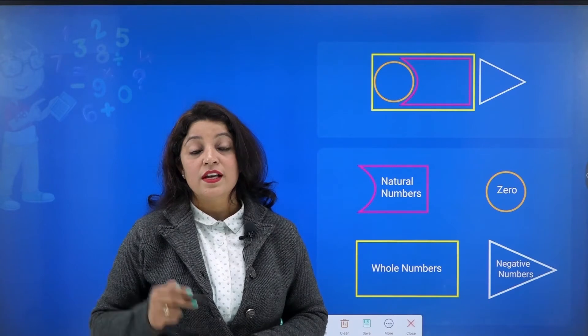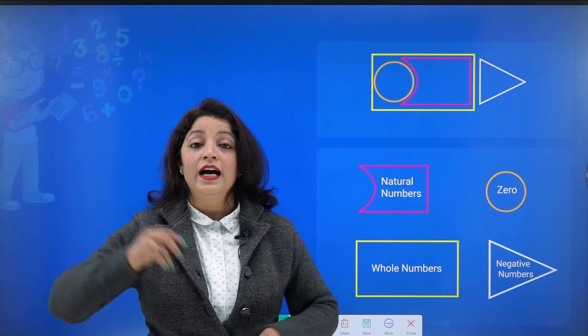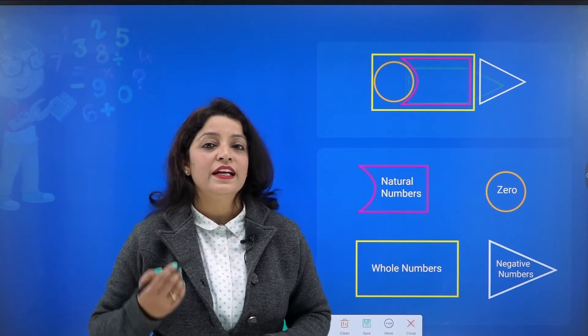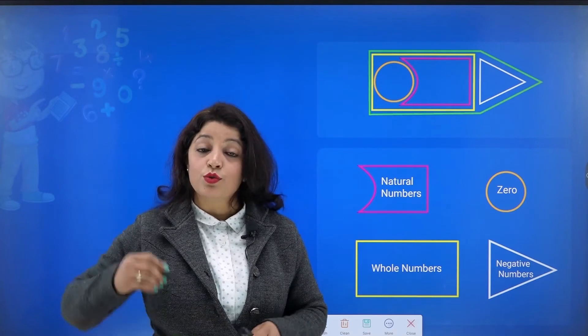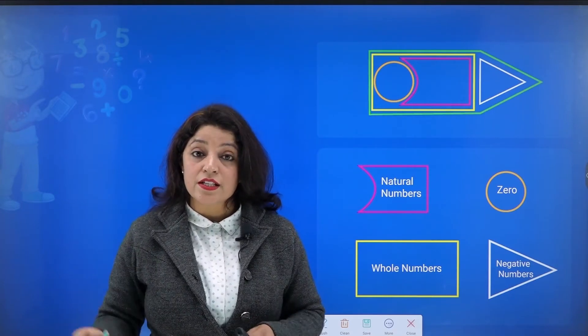Now, to the whole numbers, if I add the set of negative numbers, then what will I get? I'll get what we call integers. So, you've seen how we can get integers.